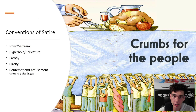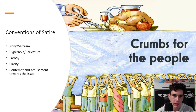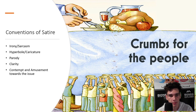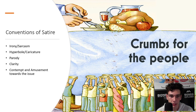Upon researching satire as a genre, I found that there are five main conventions which are commonplace among satirical texts. These are irony, hyperbole, parody, clarity, and common contempt and amusement towards whatever issue it's targeting.